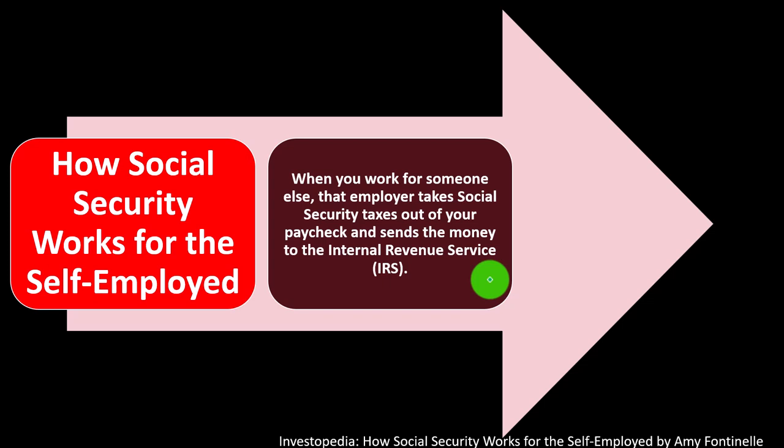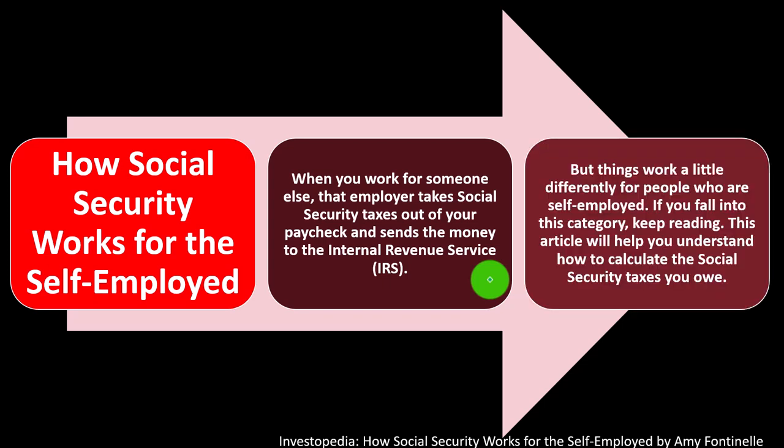When you work for someone else, that employer takes Social Security tax out of your paycheck and sends the money to the Internal Revenue Service. So you get taxed when you're an employee — your W-2 employee. When you get paid, they take money out and pay it for income taxes, but they also break out the Social Security as part of your paycheck and give that to the government as well. So you're paying different forms of taxes, even though they're both kind of federal, going to different accounts on the government side. But things work a little differently for people who are self-employed.